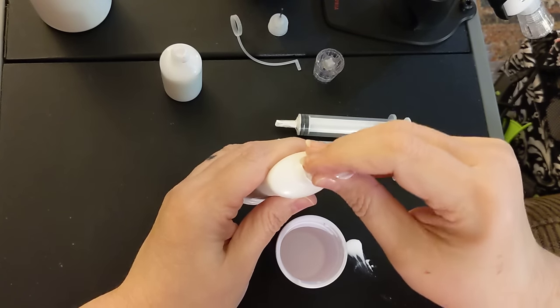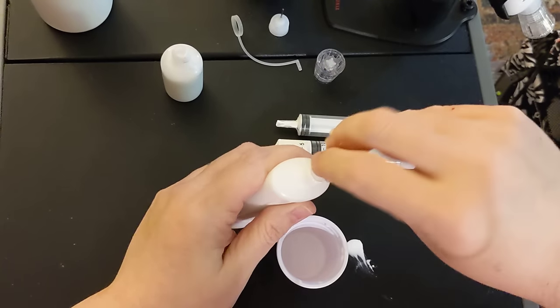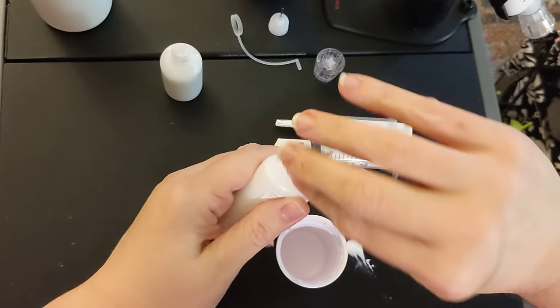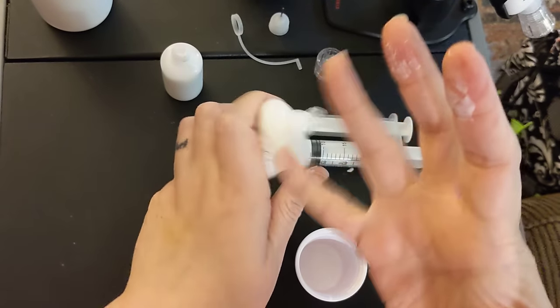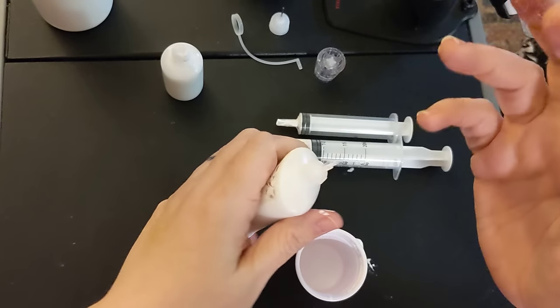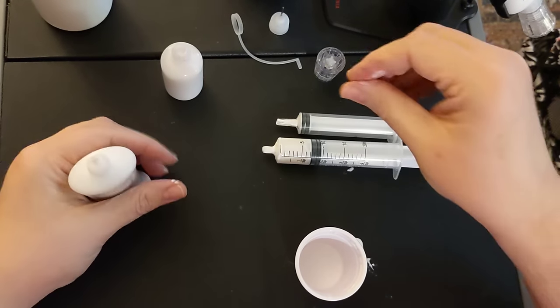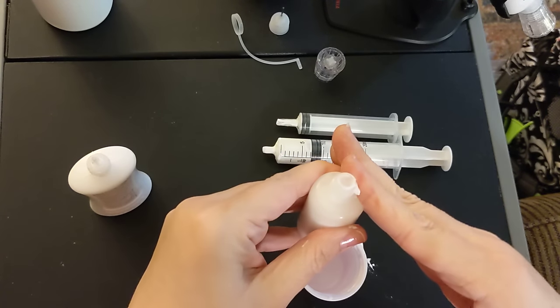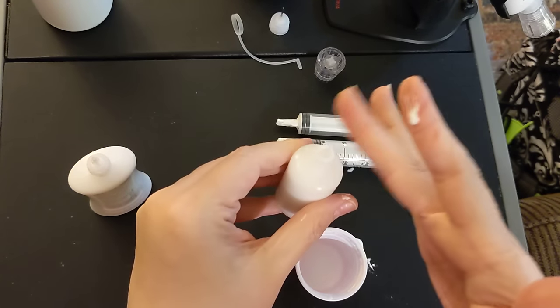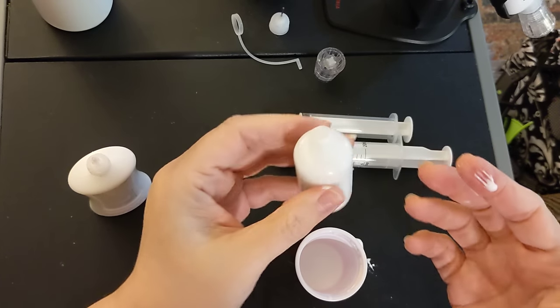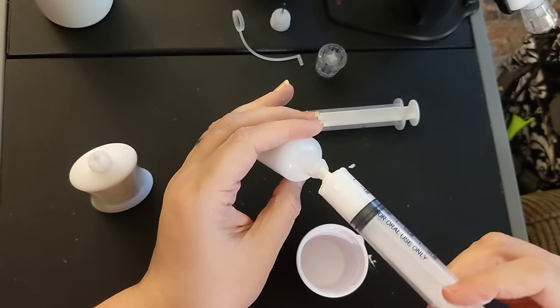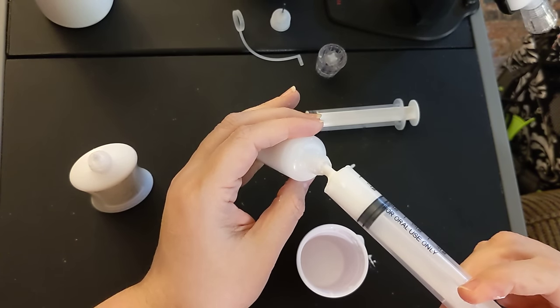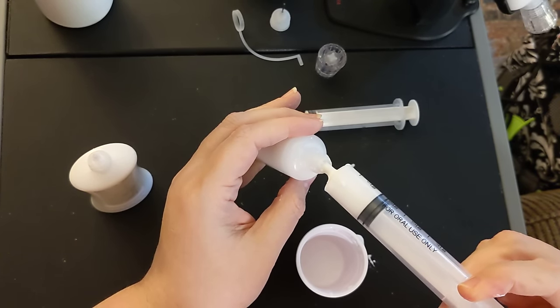You just push it back in nice and tight. And again, before I put my cap on this one, I am going to get my baby wipes and clean that up because I don't want to glue my cap on. Same thing for this one. I'm going to wipe off the threads, but I'm not going to put my lid back on it just yet. That one could actually take a little bit more. There's still some in here. Let me see if I can fill that one up a little bit more.